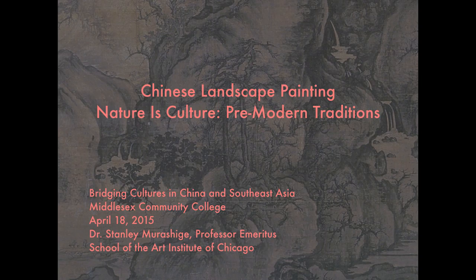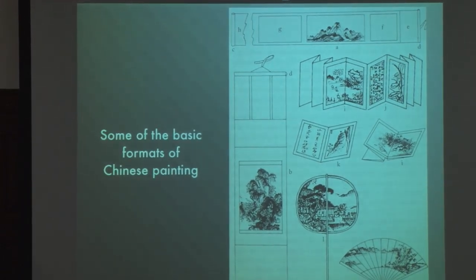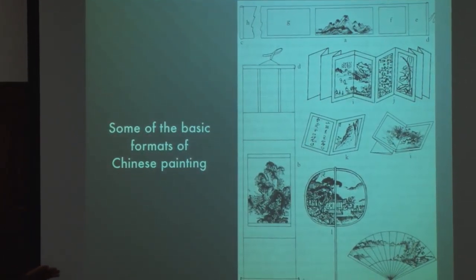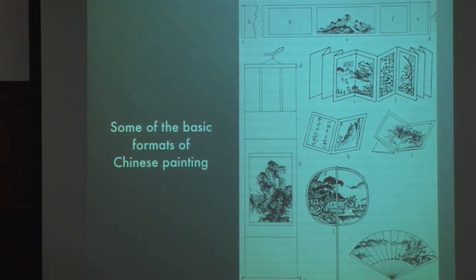This is introductory information about some of the formats and materials of Chinese painting. This little diagram shows some of the basic, common formats for Chinese painting. The basic medium for painting would be paper and silk.